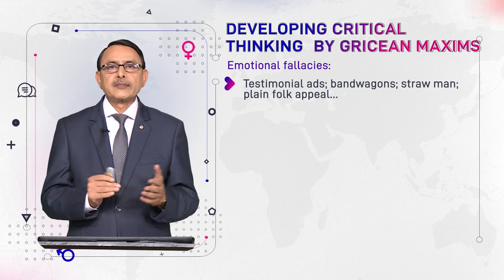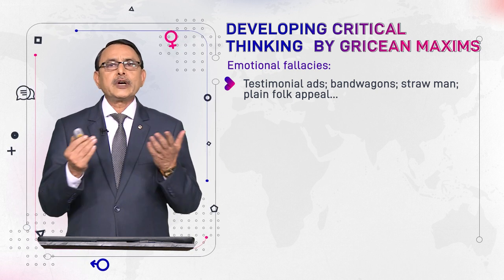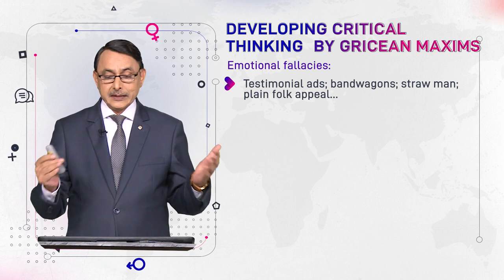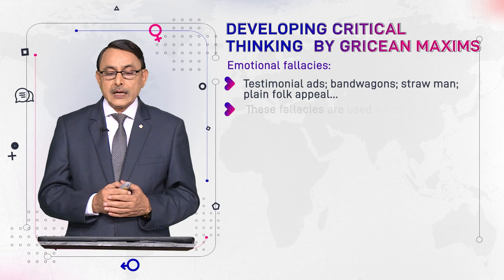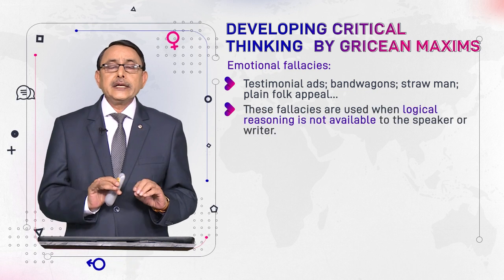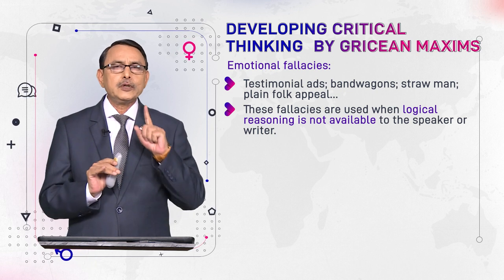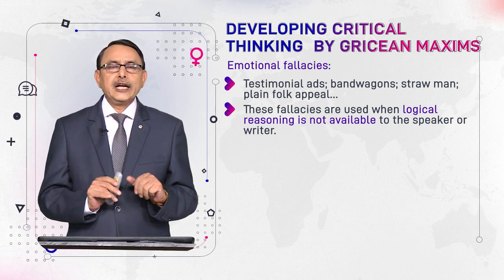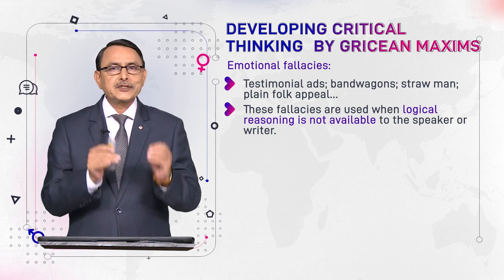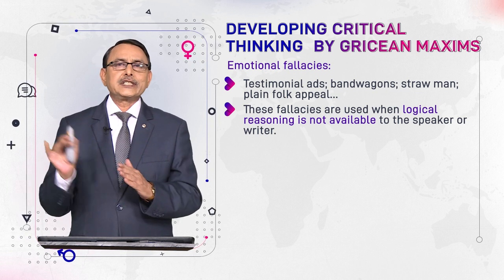For example: everybody is buying plots, so you should also buy a plot instead of a car. This is the bandwagon fallacy. In these emotional fallacies, you don't appeal to logic — you appeal to emotions. And when you appeal to emotions, logic is silent. This is done deliberately and knowingly to avoid logic.